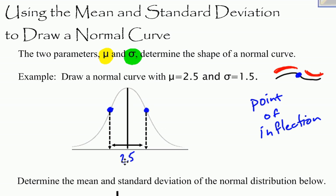So this would be 2.5. 2.5 is my mean plus 1.5. 2.5 plus 1.5 takes me to 4. So right here is 4 on my number line. And then 2.5 over on this side, 2.5 minus 1.5 takes me to 1. So there is my point of inflection there. So I have used the mean and the standard deviation to draw and label a normal curve.